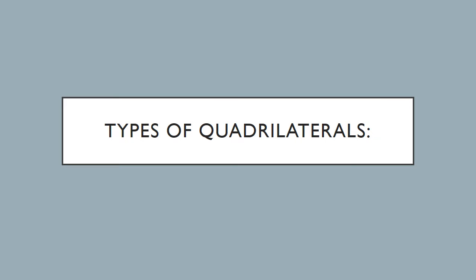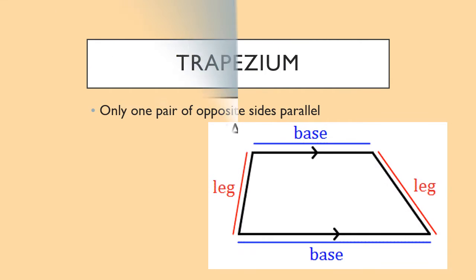Let's have a look at the types of quadrilaterals that we get and their properties. The very first quadrilateral is the trapezium, and it has only one property: only one pair of opposite sides are parallel.